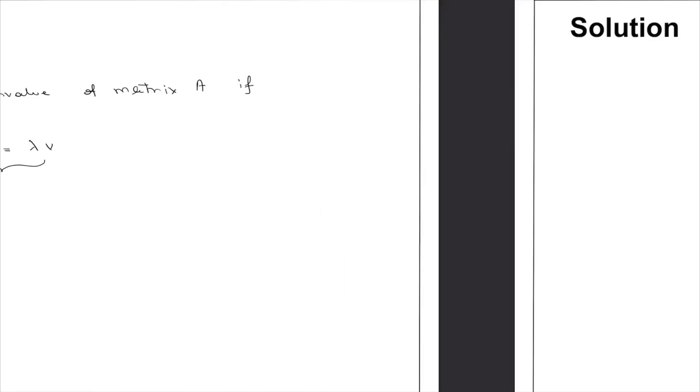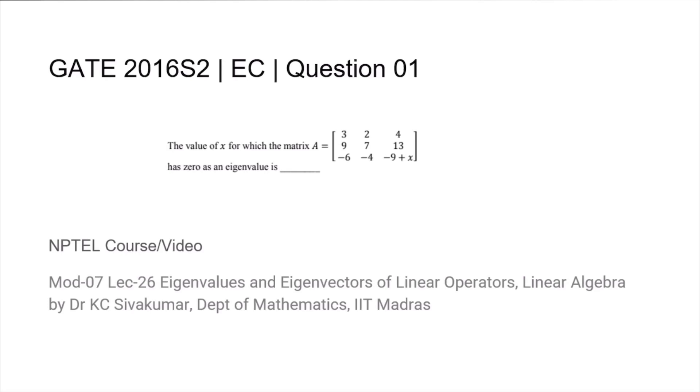What is the question asking us? For what value of x will this matrix A have a 0 eigenvalue? So what does it mean for the eigenvalue to be 0? It means there exists a vector v such that Av is equal to, well lambda is now 0, 0v. But 0 into v is just the 0 vector, that is Av is equal to 0.